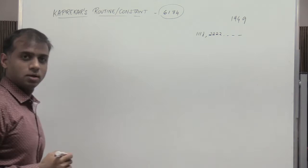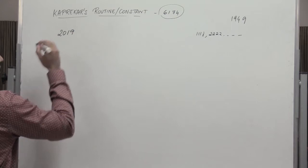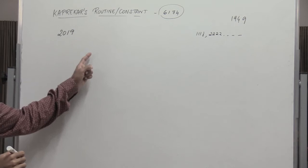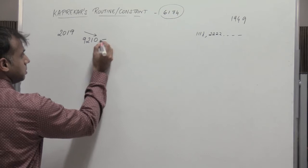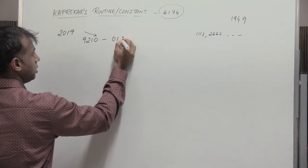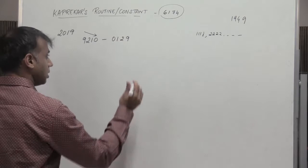So let's take a four-digit number. Let us take 2019. Now these numbers are written in the descending and ascending order. So I write the number 9210 in the descending minus the same numbers written in ascending order which is 0129. Subtract both of them. So when I do that, I get 9081.